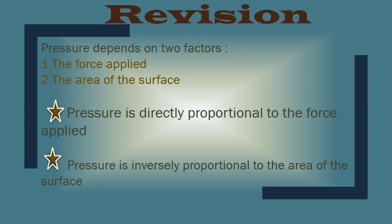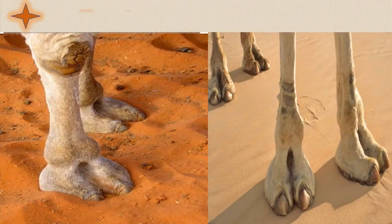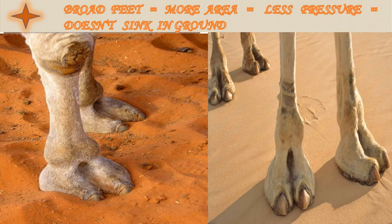So using this information, we will see some practical examples on pressure. The first among which is: a camel can easily cross the desert as compared to a horse or a donkey.